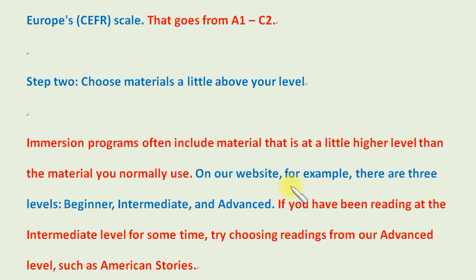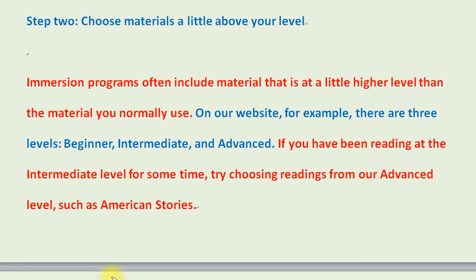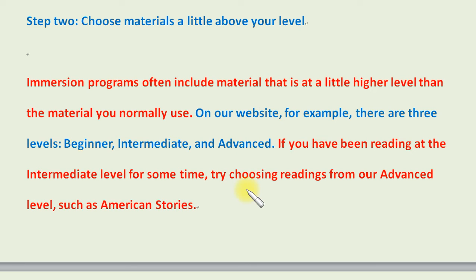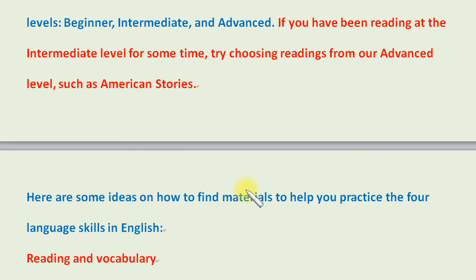Step two: choose materials a little above your level. Immersion programs often include material that is at a little higher level than the material you normally use. On our website, for example, there are three levels: beginner, intermediate, and advanced. If you have been reading at the intermediate level for some time, try choosing readings from our advanced level, such as American Stories.